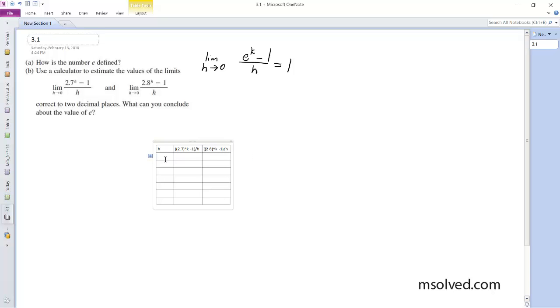and the only thing it's going to change is 2.7 is going to become 2.8. Alright, so this is going to be negative 0.001. I'm just going to copy that blank.